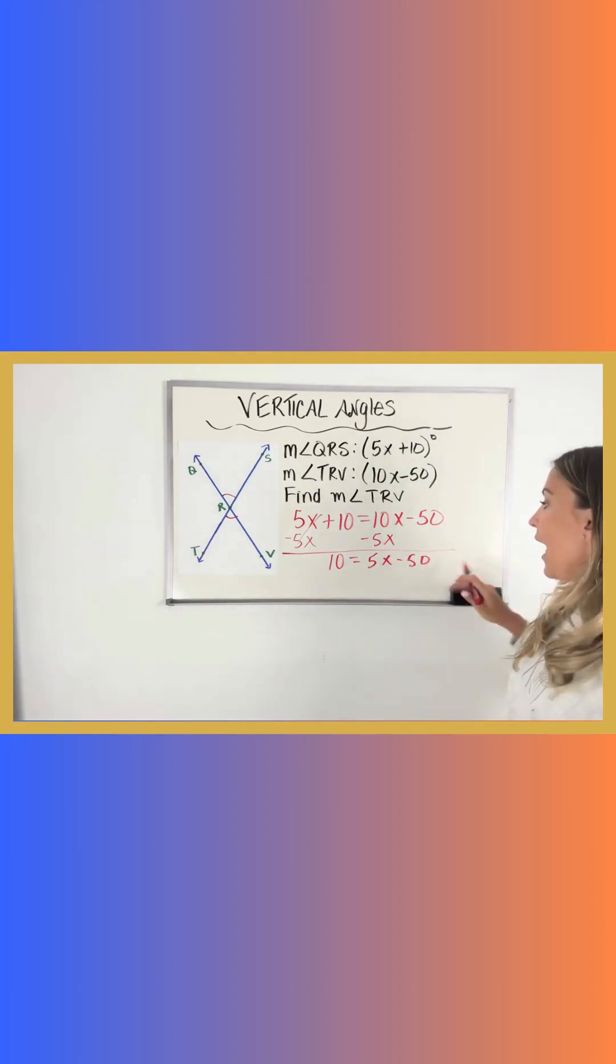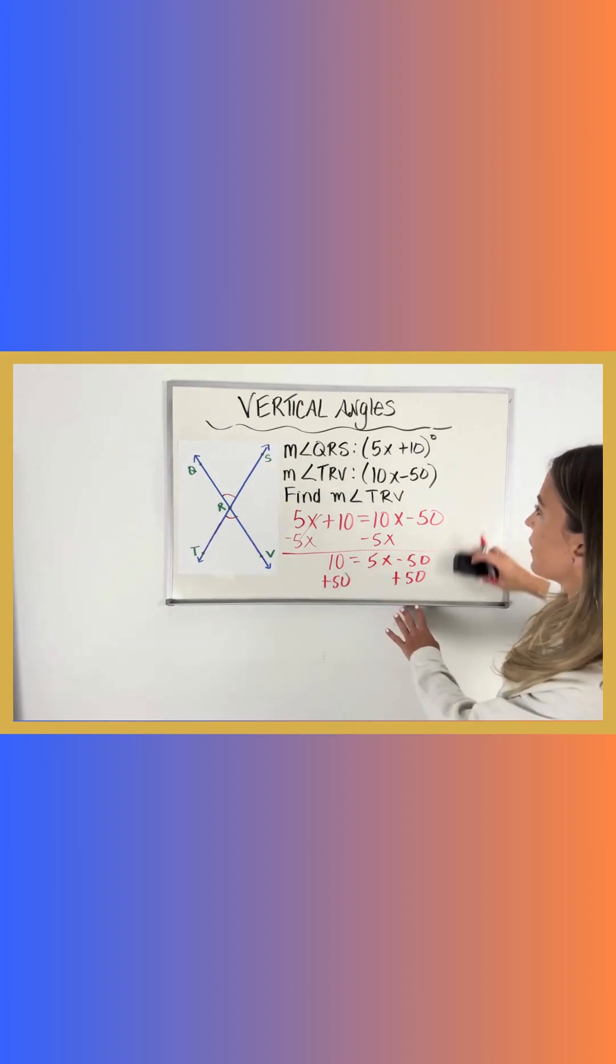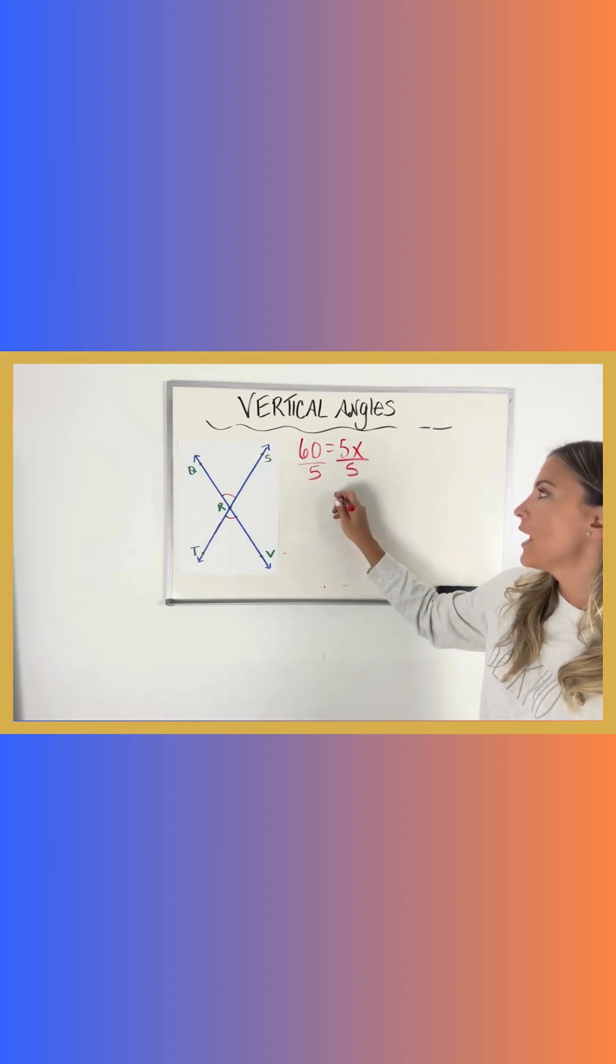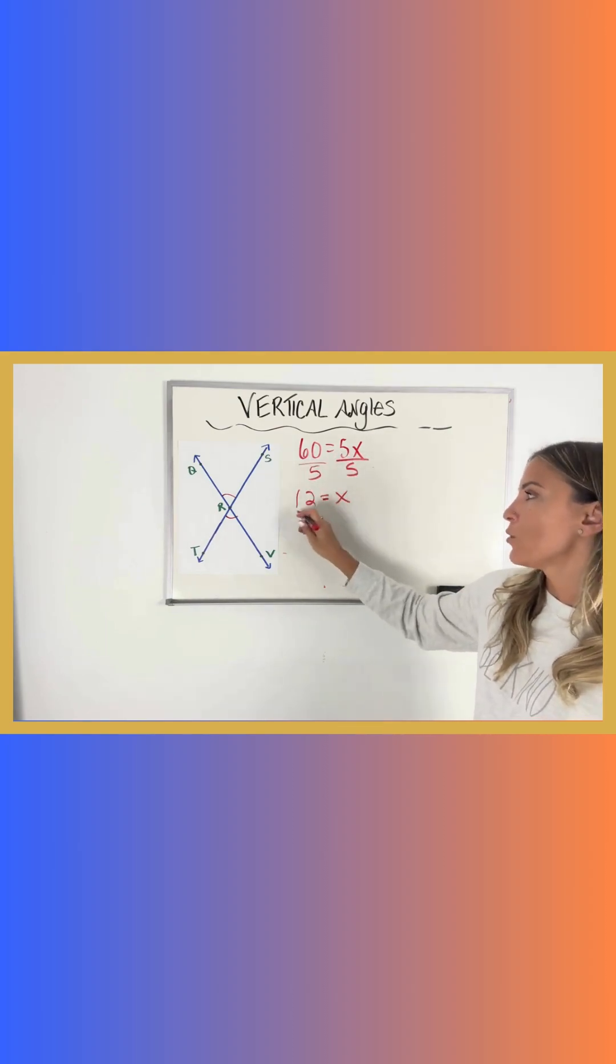Now I have a two-step equation. I'm going to add 50 to both sides. I'm going to bring my work up here. Actually, let me just erase this. 60 equals 5x, so I have a one-step equation left to solve. I'm going to divide by 5 on both sides, and that's going to give me x equals 12. So I found the value of x.